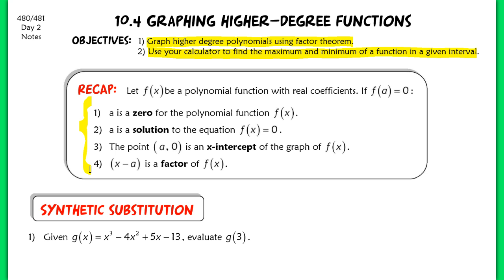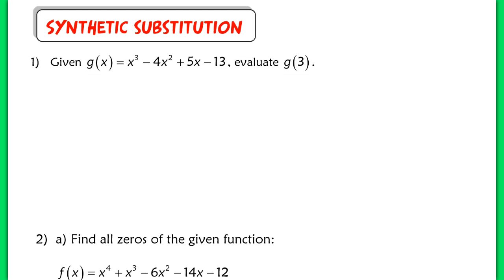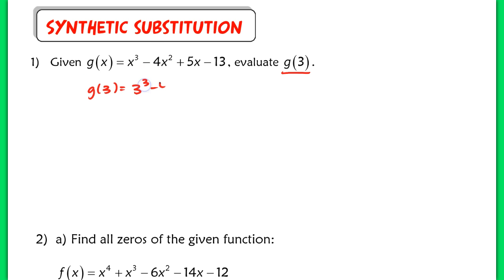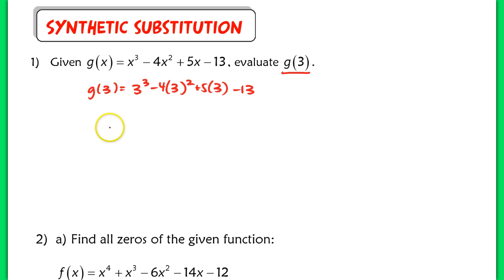Please know the difference between each and every one of these terms. Let's start with a brief review of synthetic substitution. Now, if I ask you to evaluate g of 3, I'm asking you to input x equals 3 into your function. You probably would want to just substitute 3 everywhere you see an x, and that would certainly be correct. But we learned a different method earlier this semester for evaluating this function.